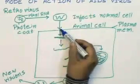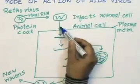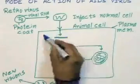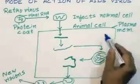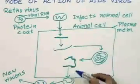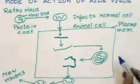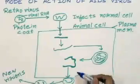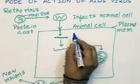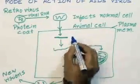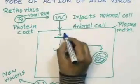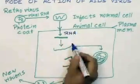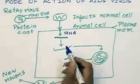Now let's see what happens when it enters an animal cell. This is an animal cell, and this is the plasma membrane of an animal cell. The viral RNA is introduced into the cell.